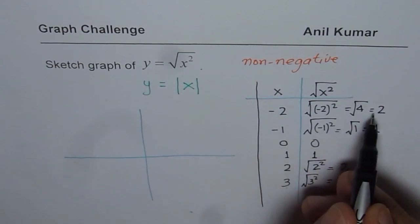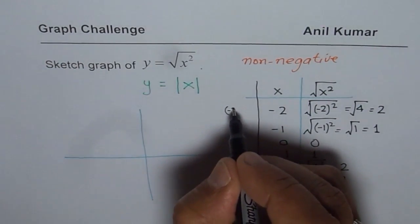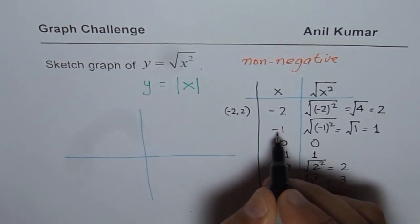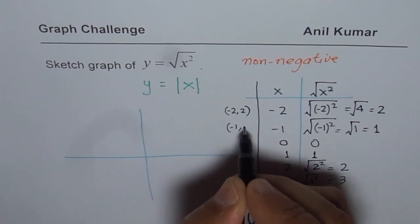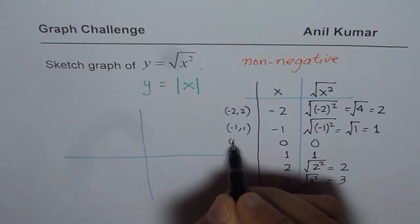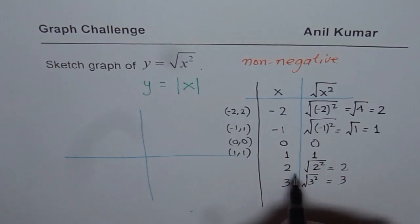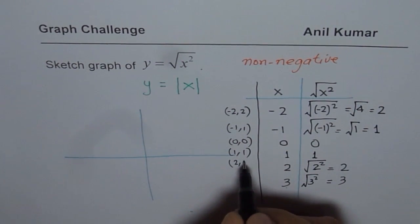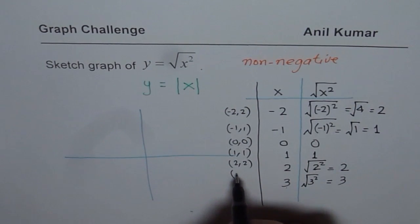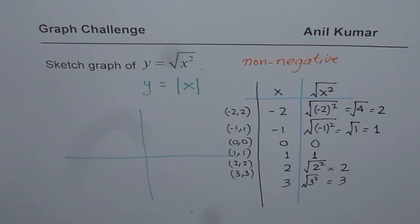So this is minus 2, 2. So let me write this as minus 2, 2. Here we have minus 1, 1. Here we have 0, 0. Then we have 1, 1, 2, 2, 3, 3, you know, and so on. So these are a few points which can help us sketch the graph.